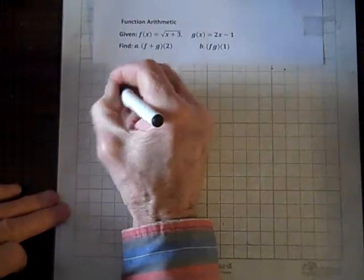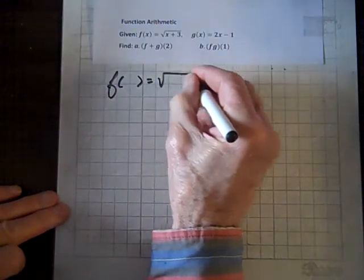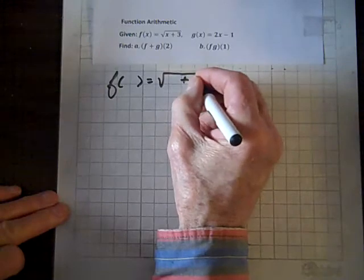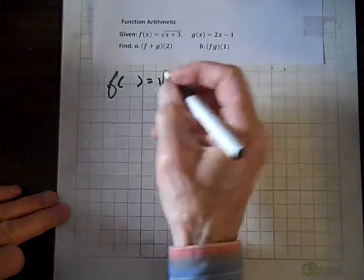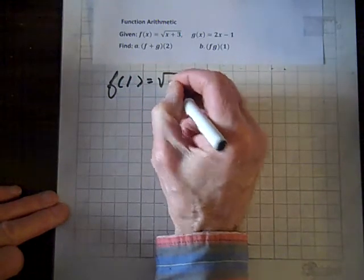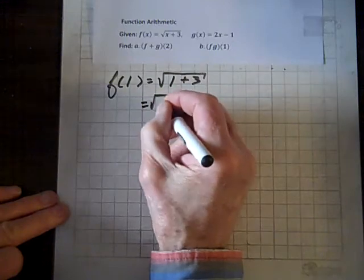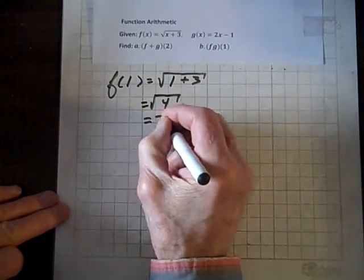So f of 1 - f of whatever equals the square root of whatever plus 3. I'm not going to put parentheses there since we have a blank spot there. If I put a 1 here, I have to put a 1 there. So that equals the square root of 4, which is 2.